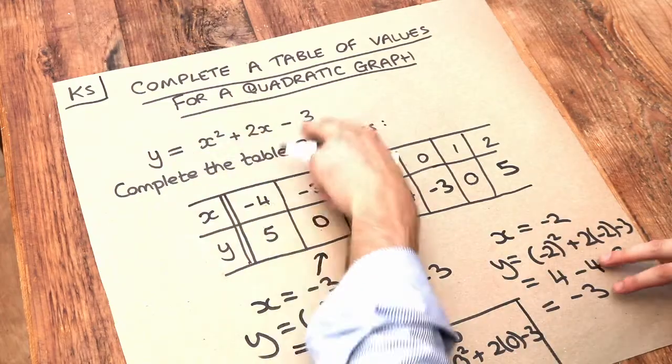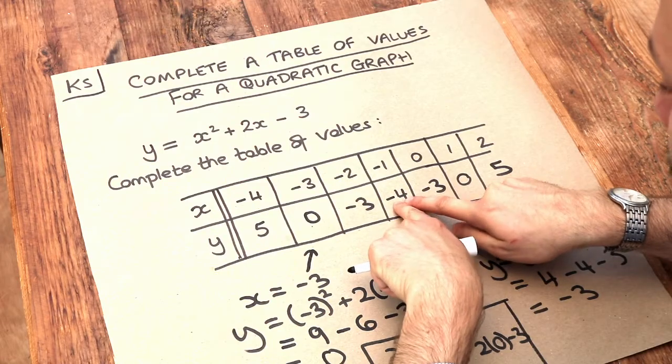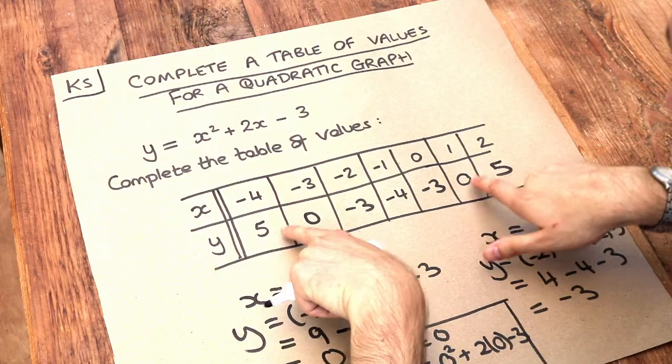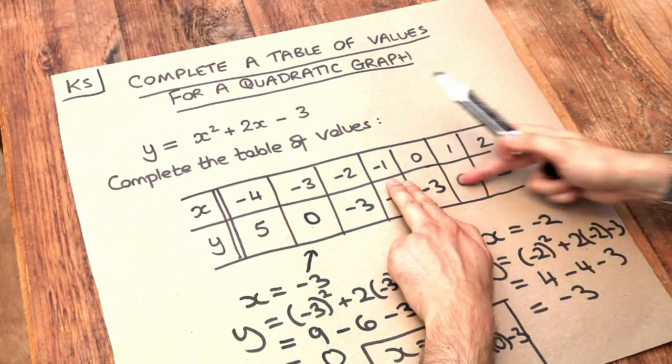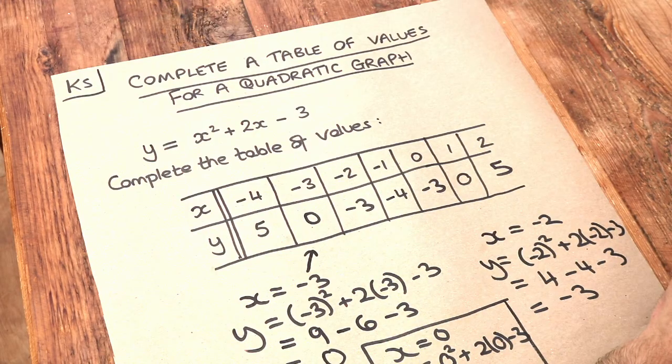Note that when we have a quadratic graph, we have symmetry in these y values. If we start from this minus 4 and go outwards, these are both minus 3, these are both 0, these are both 5. You can see it's symmetrical either side of that minus 4. This helps you check whether your values are correct.